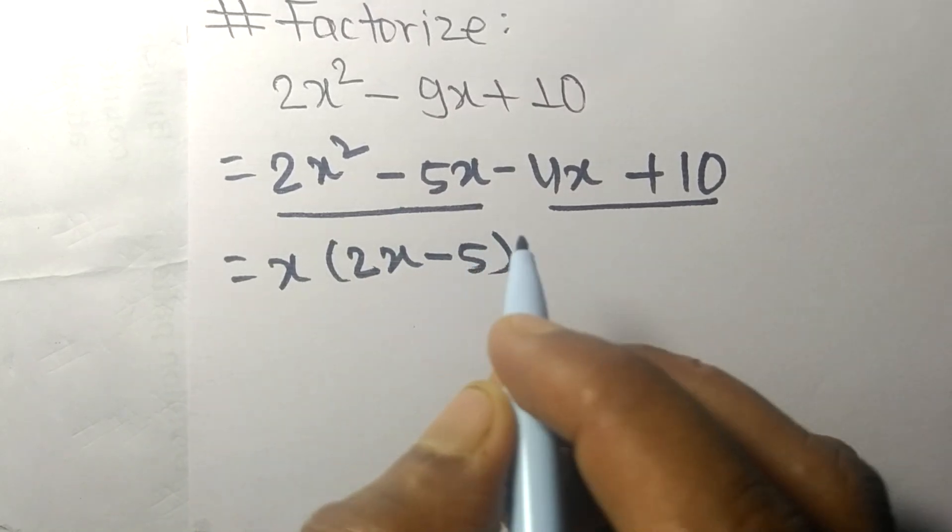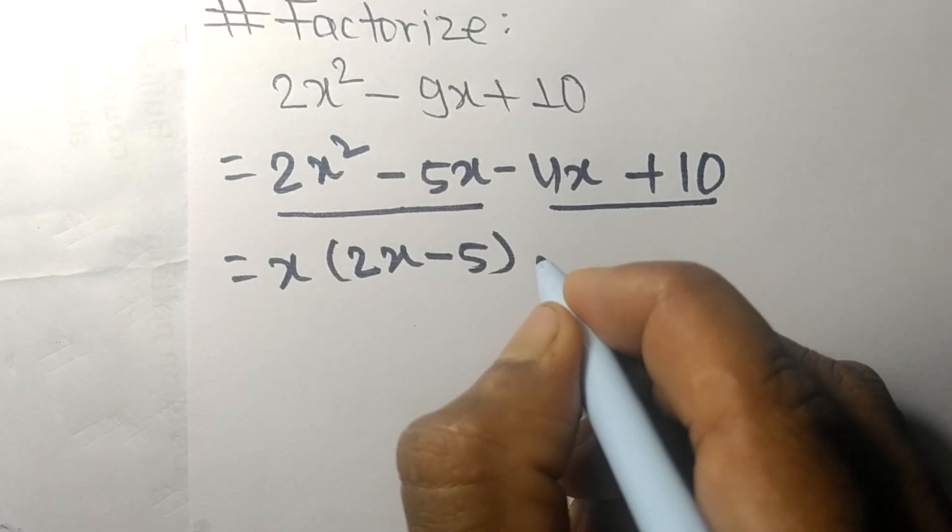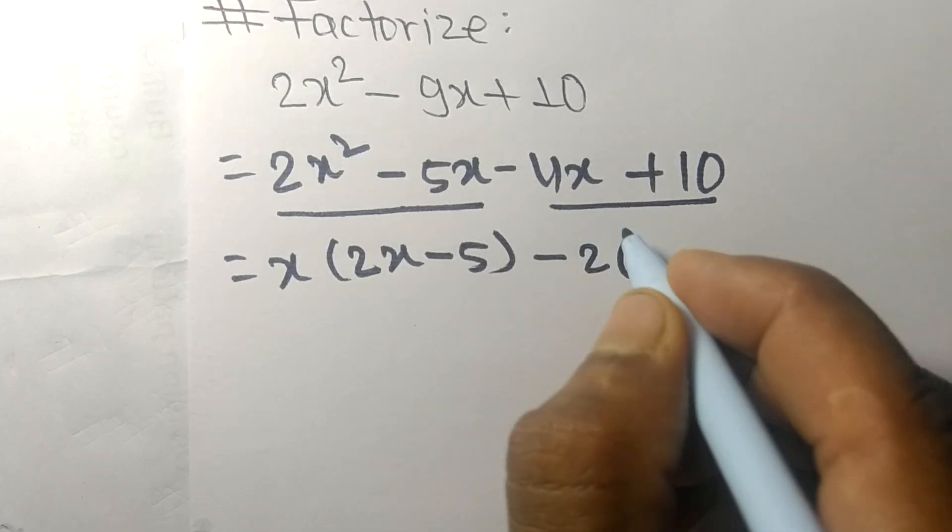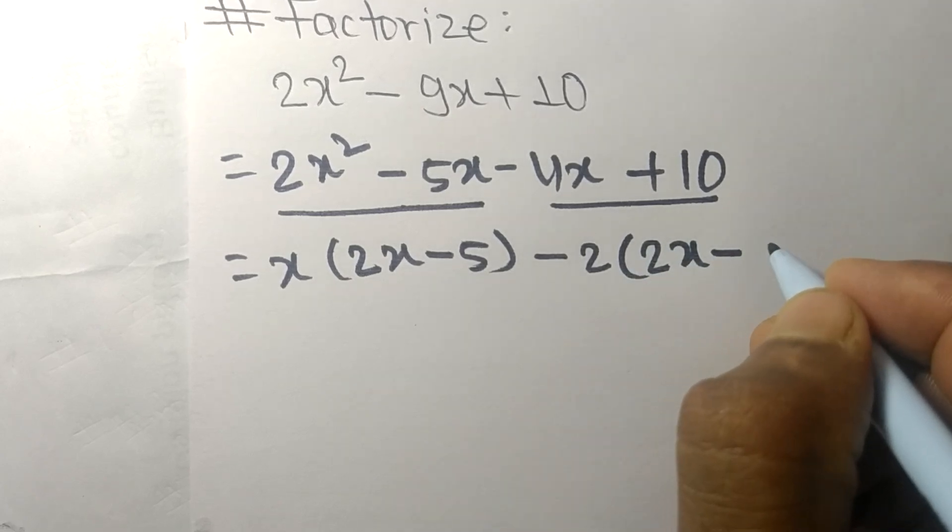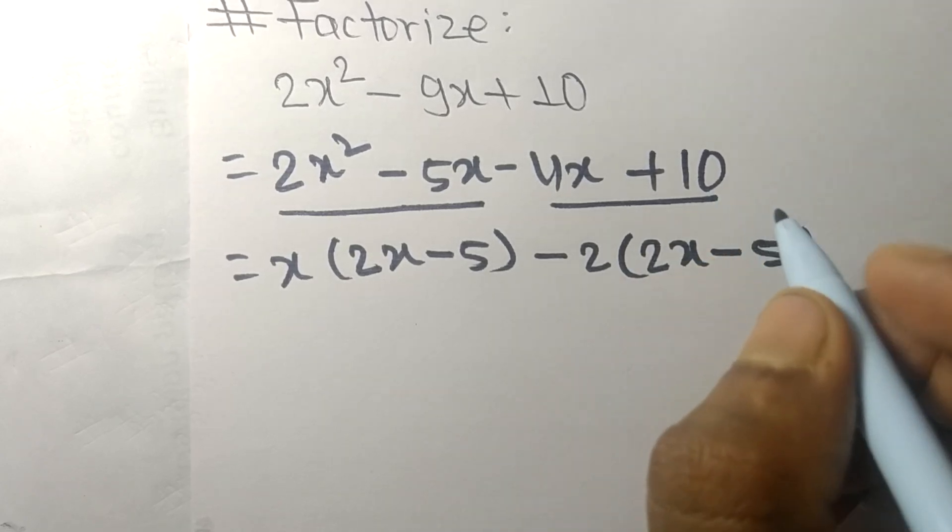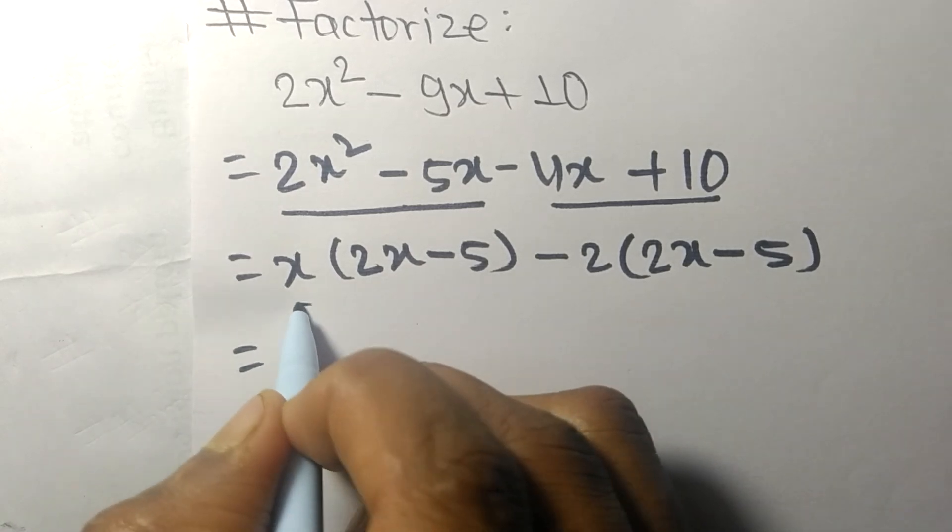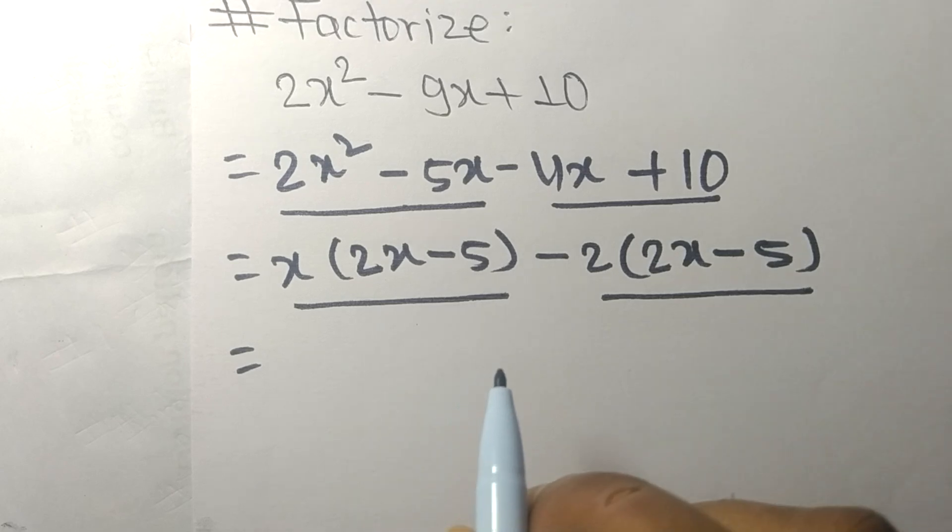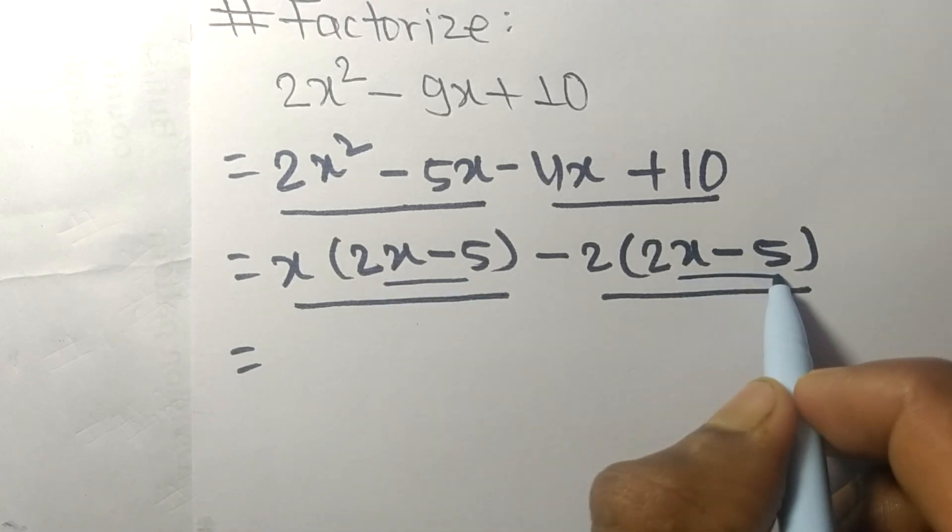Since -2 times 5 equals -10, we now find the common factor in the first and second expressions. Both contain 2x - 5, so we factor out this common binomial.